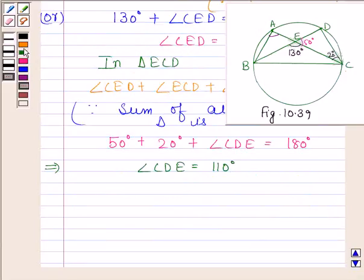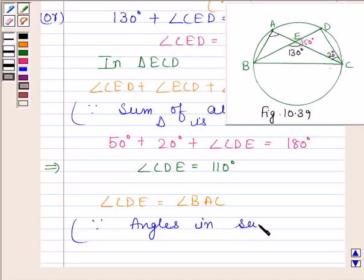Now angle CDE and angle BAC are equal because these are angles in the same segment. And we know that angles in the same segment are equal.